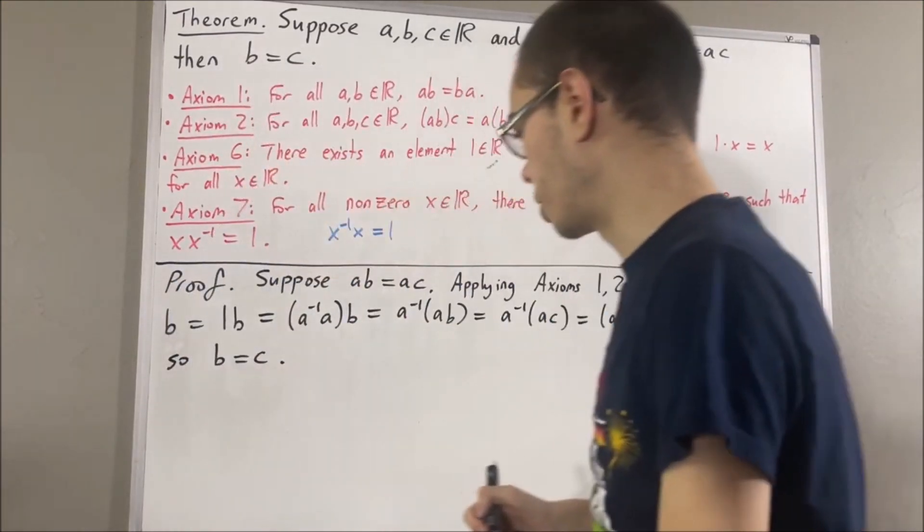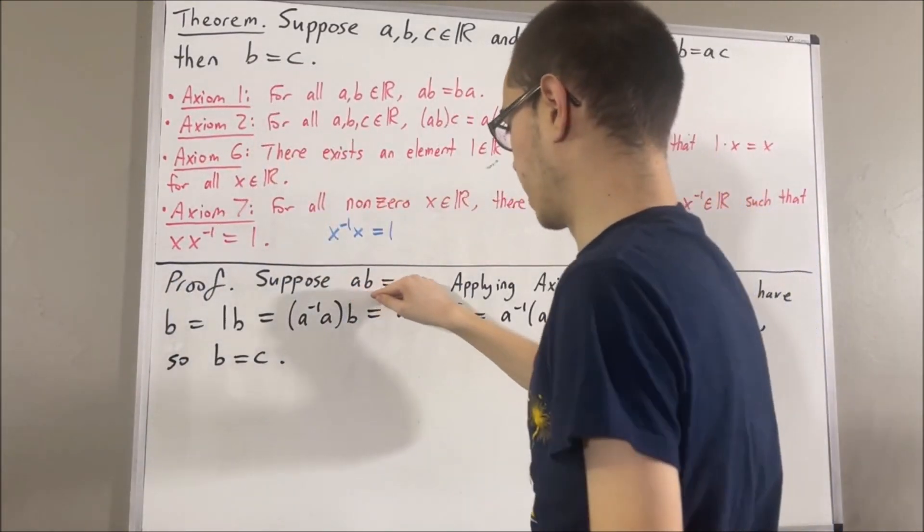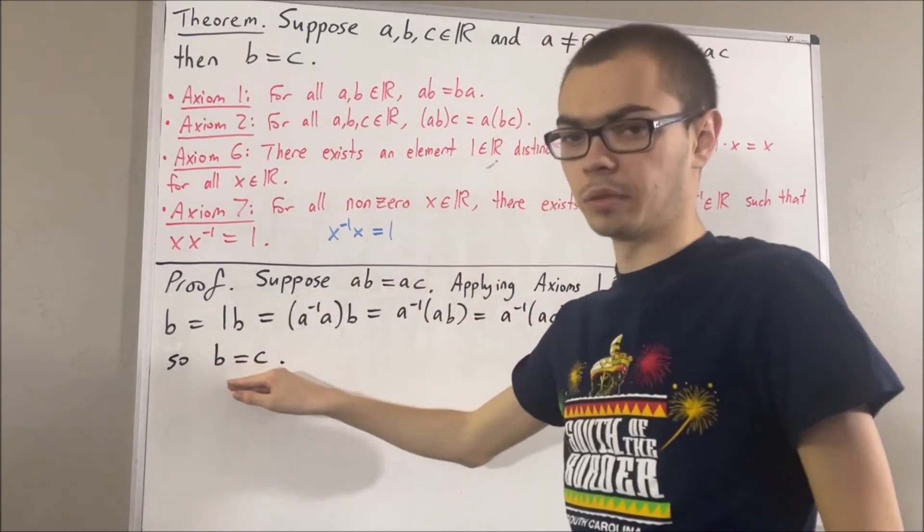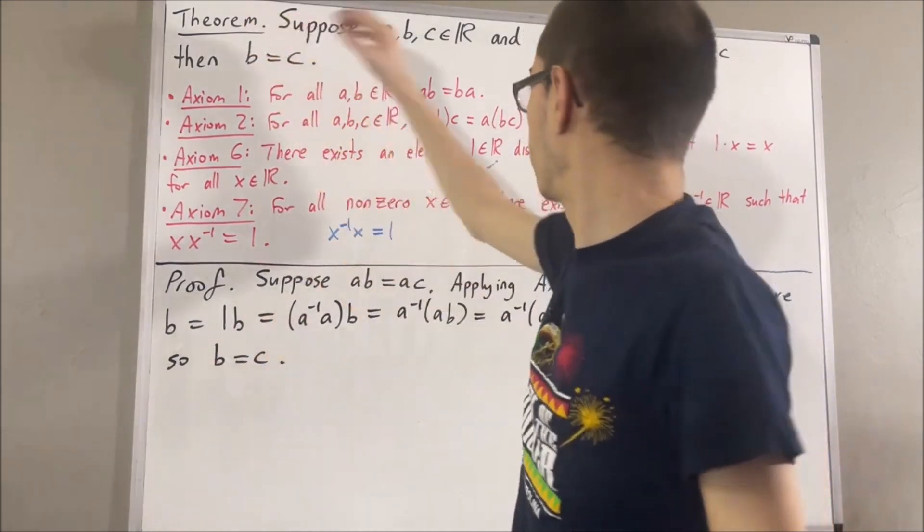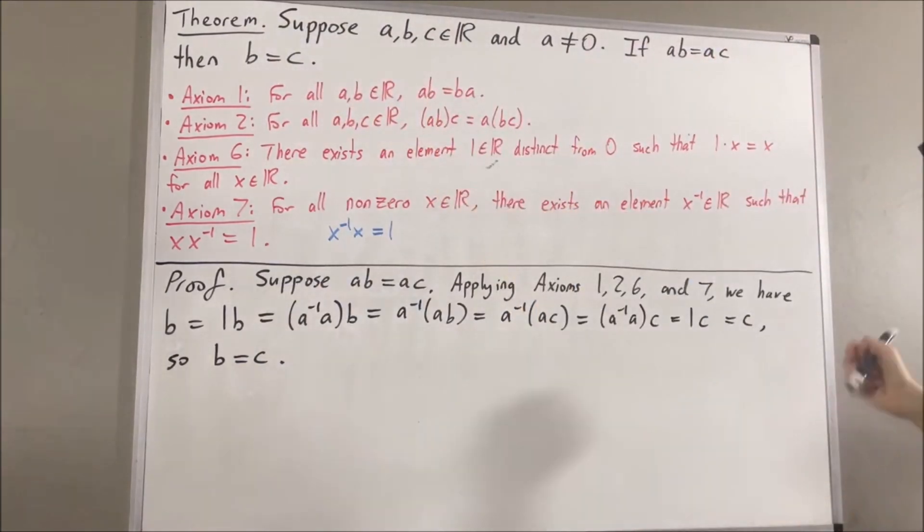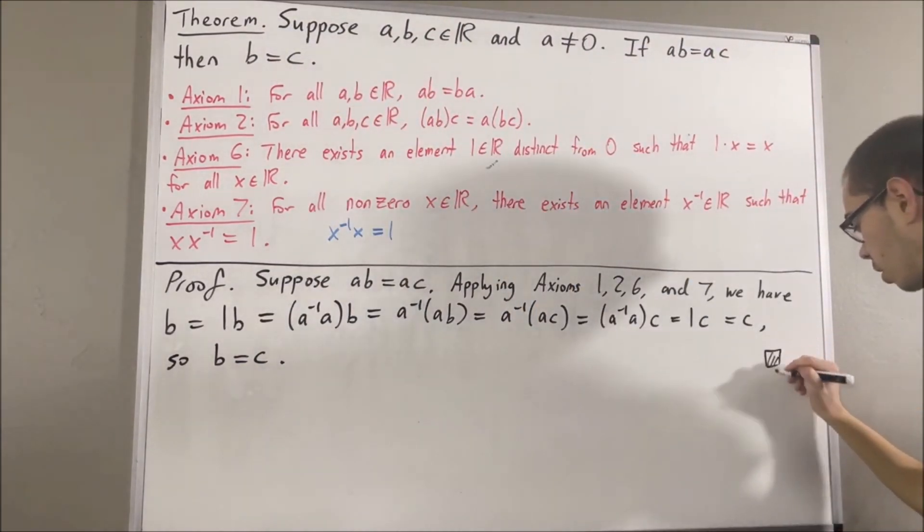And so, what we have shown here is, if AB is equal to AC, then B is equal to C. And that is exactly what we wanted to prove. So, this completes the proof.